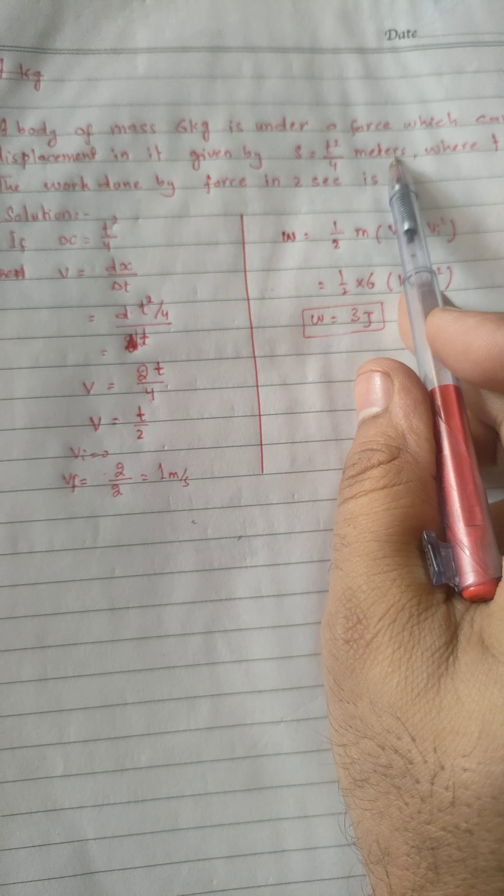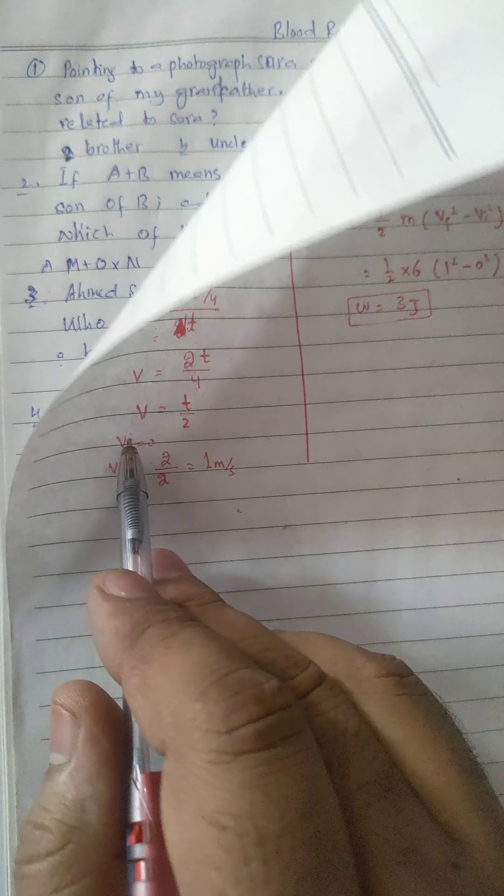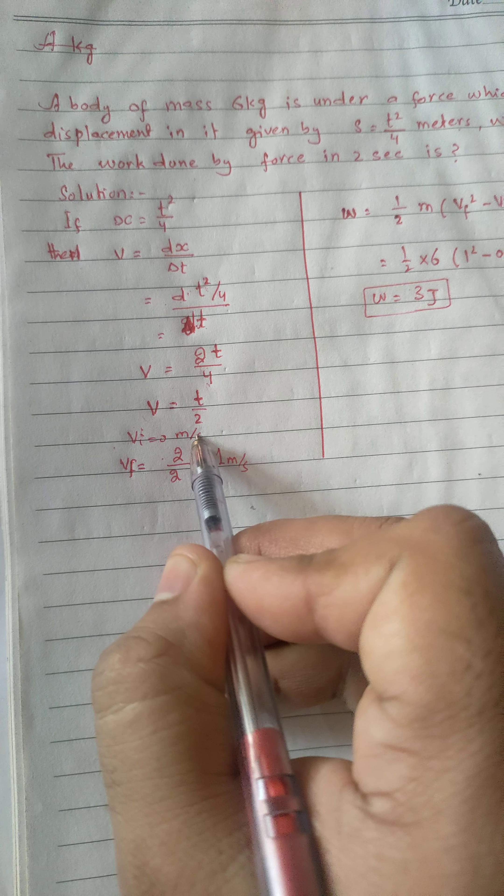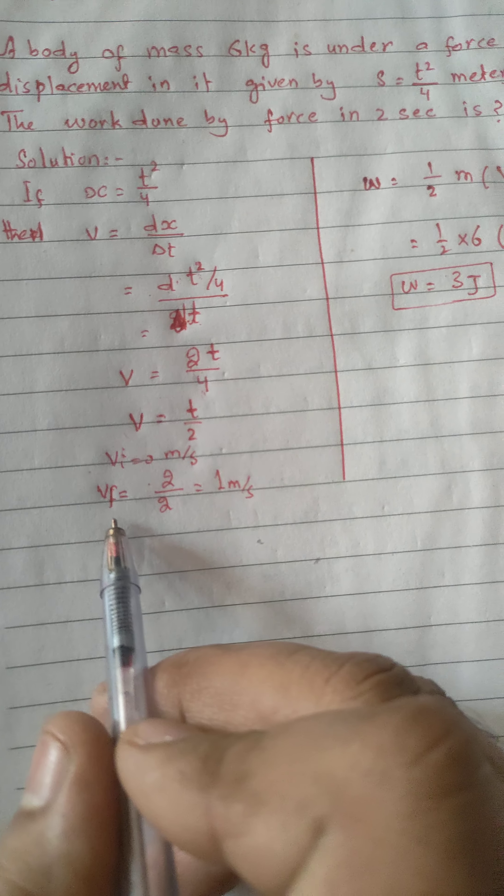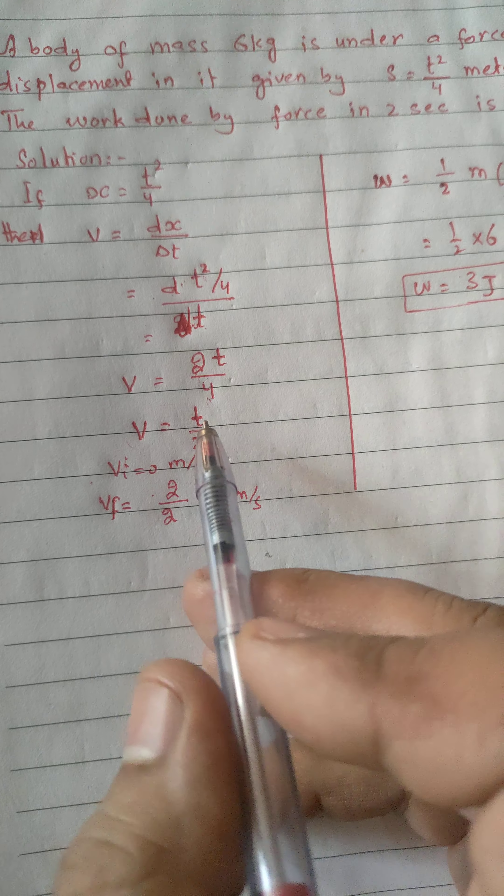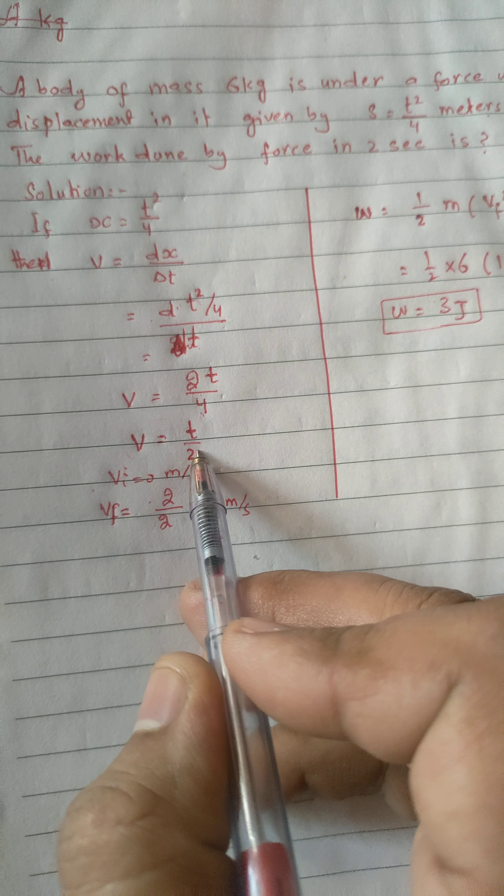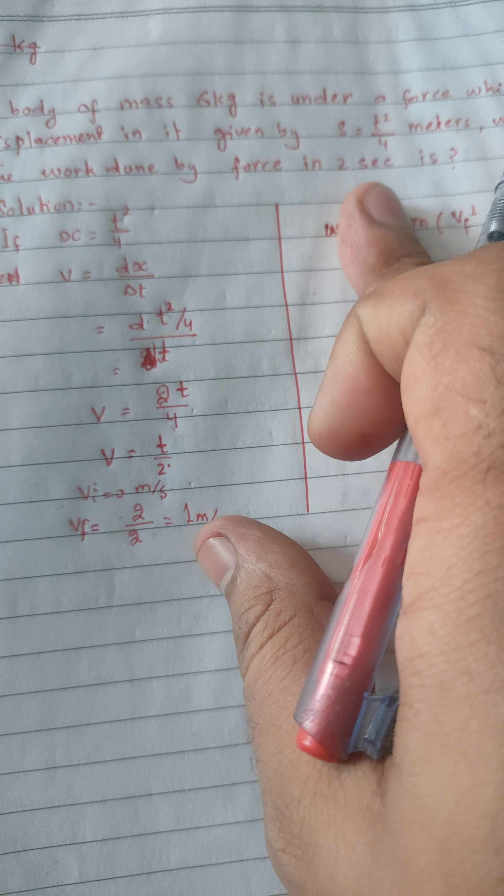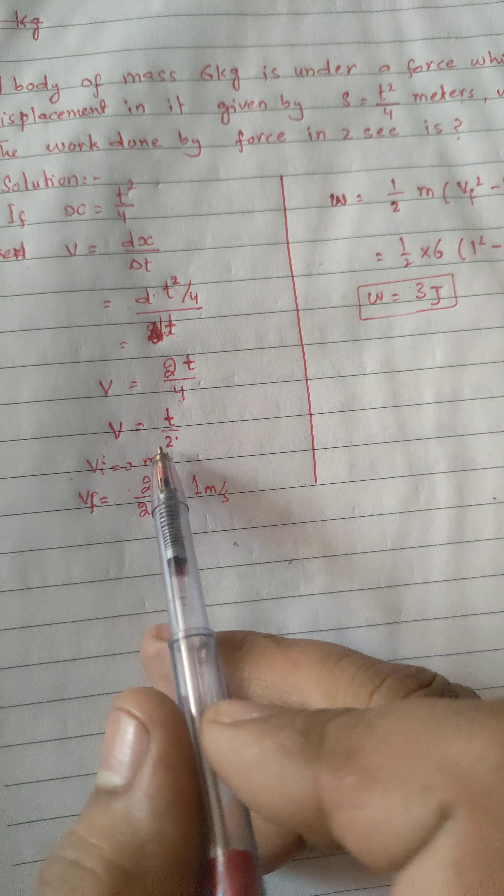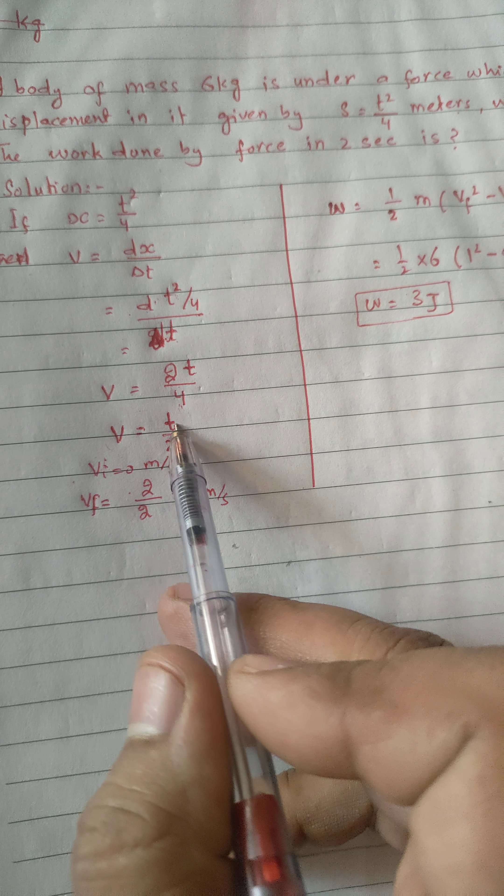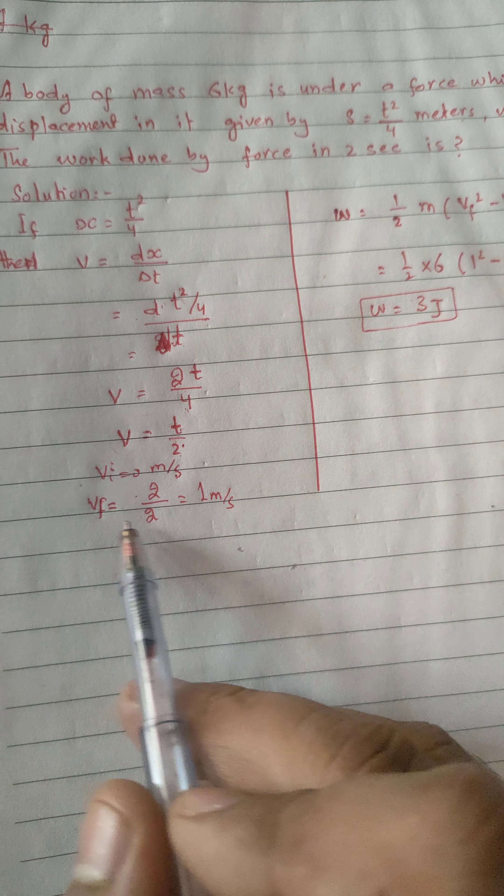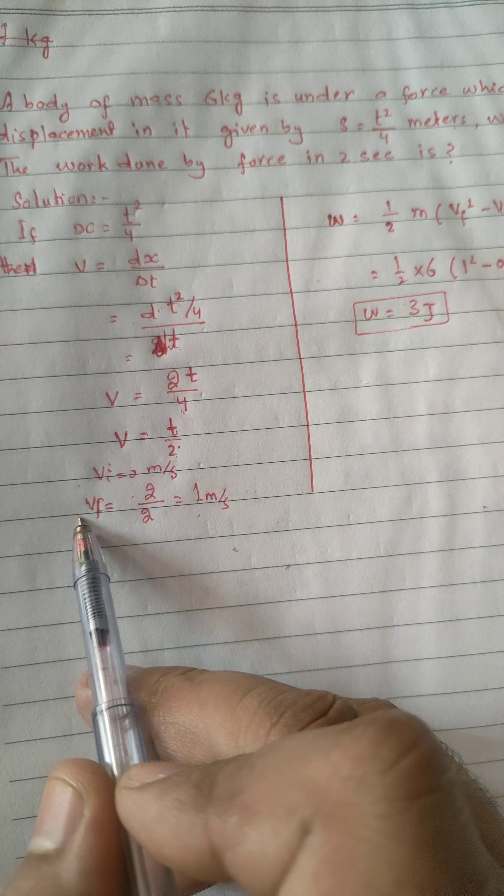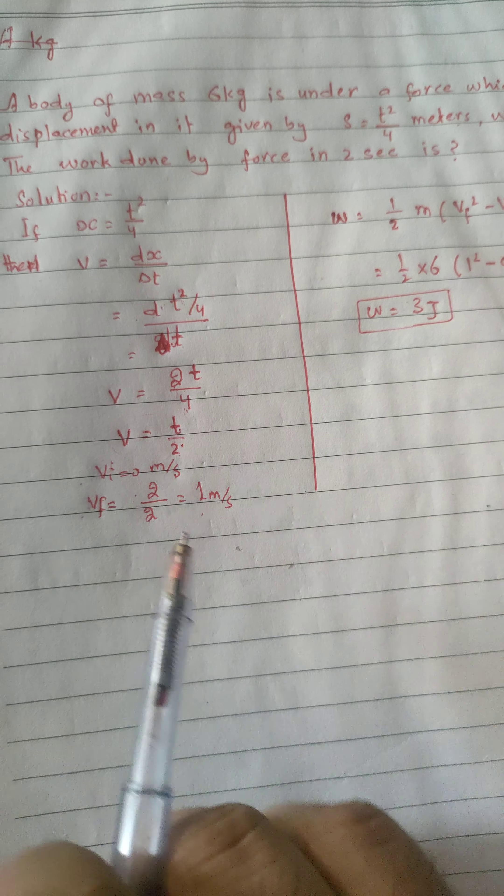Here initial velocity will be 0, and the final velocity is T/2. This means that if we have to know work done in 2 seconds, then the value of time is 2 seconds, so 2/2, the final velocity value is 1.